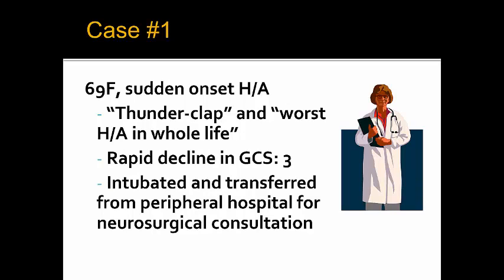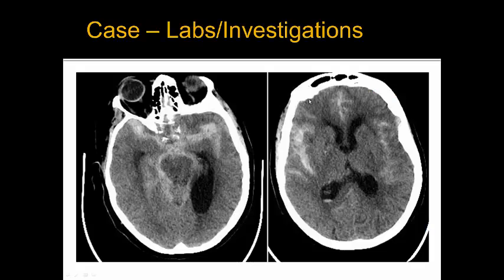Getting to case one: a 69-year-old female with a sudden onset, worst headache of her life — thunderclap. She had a rapid decline in her GCS, which was 3 out of 15, and was later intubated and transferred from a peripheral hospital for neurosurgical consultation. On first CT head, the patient had diffuse subarachnoid hemorrhage seen in the sulci, the subarachnoid space, the basal cisterns, and the circle of Willis, indicating diffuse subarachnoid hemorrhage.